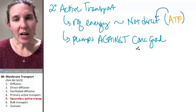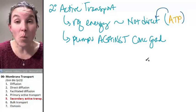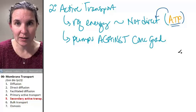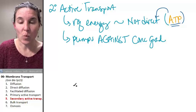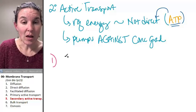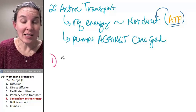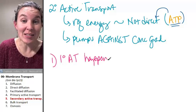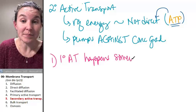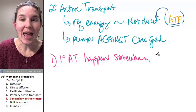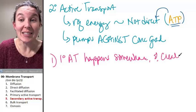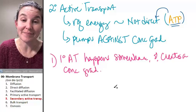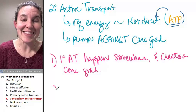In secondary active transport, there is someone who is pumping against a concentration gradient. So step one, someone does primary active transport. It happens somewhere and creates a concentration gradient.